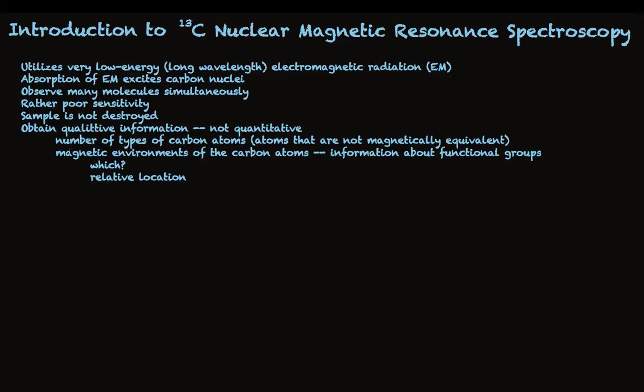In its simplest applications, the ones we'll talk about, there are two types of information carbon NMR provides. One is the number of types of carbon atoms, meaning the number of carbon atoms that are not magnetically equivalent. The second is the magnetic environments of these carbons. This translates into information about functional groups, which and relative location. What we don't get is specific information about the numbers of carbon or which carbon atoms are directly attached to which other carbon atom.